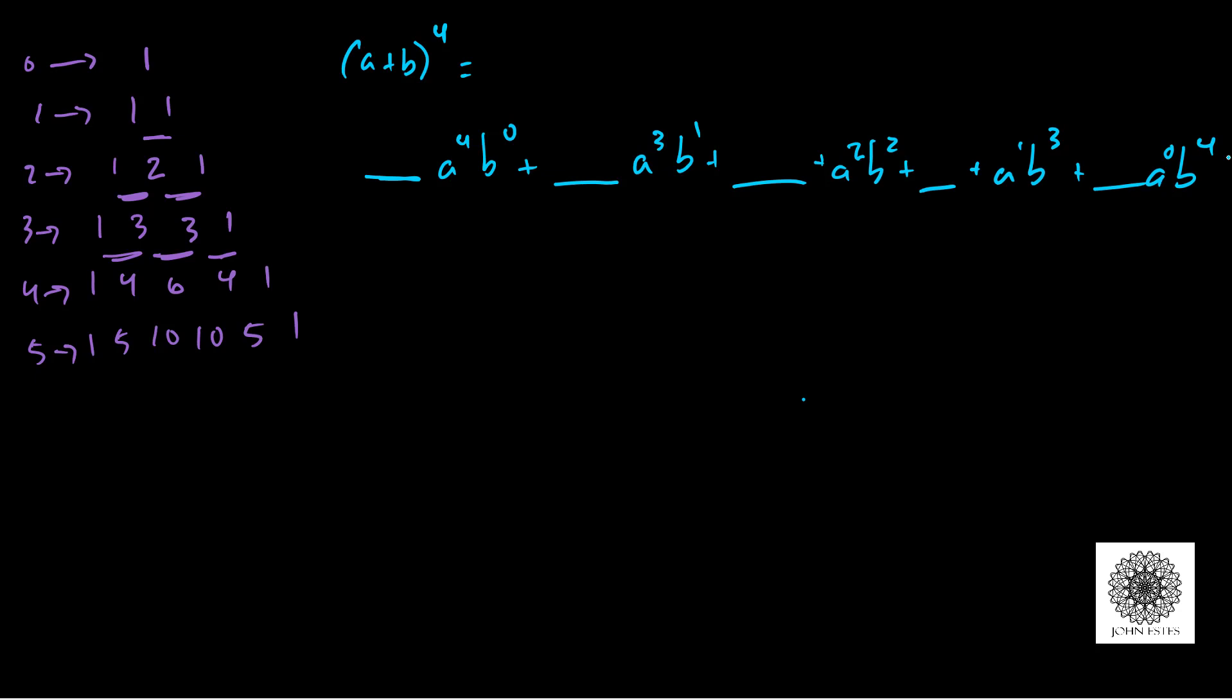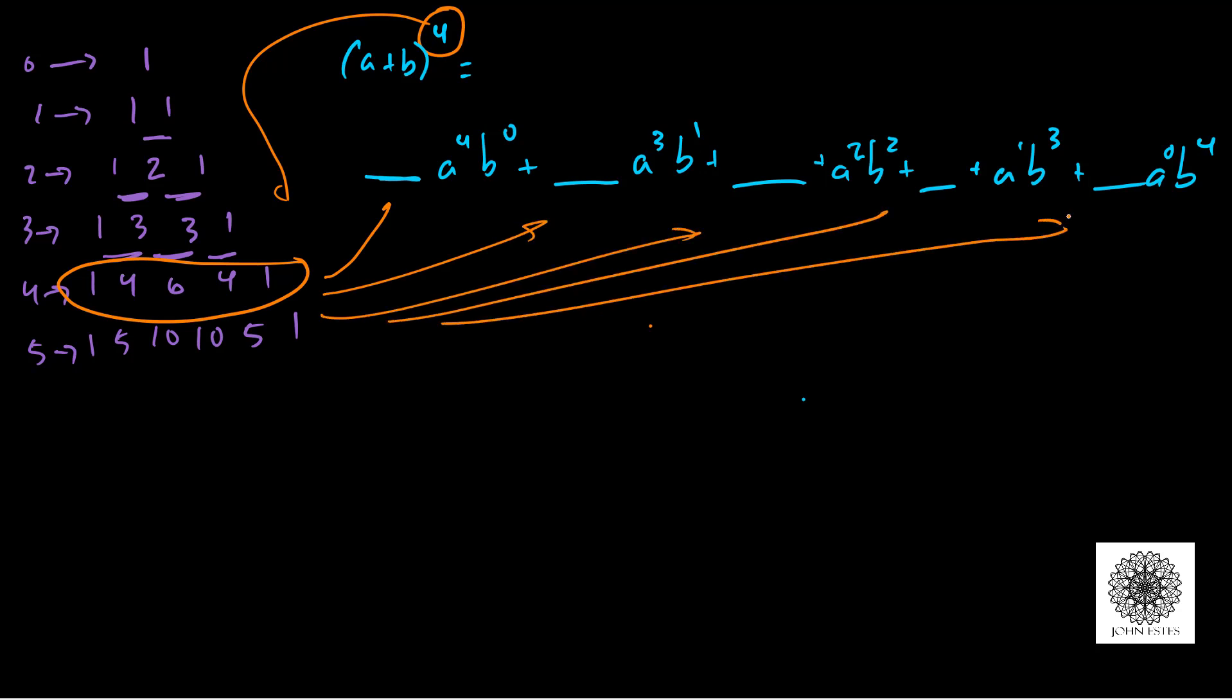The only thing that's missing here are these coefficients, and that's where Pascal's triangle comes in. Since I'm raising this thing to the fourth power, I want to locate the fourth row of Pascal's triangle. For reasons we don't really need to explain here, these become the coefficients of my expansion.